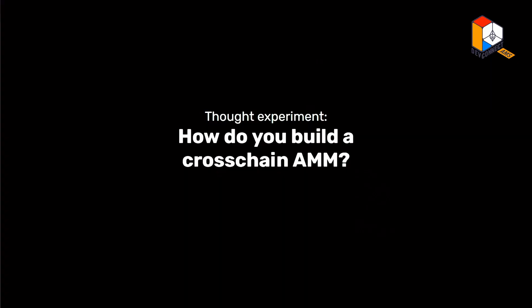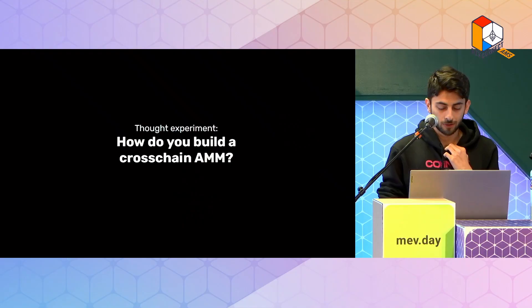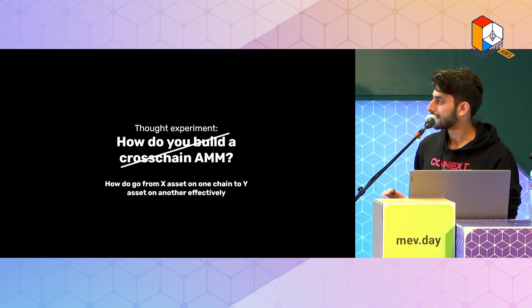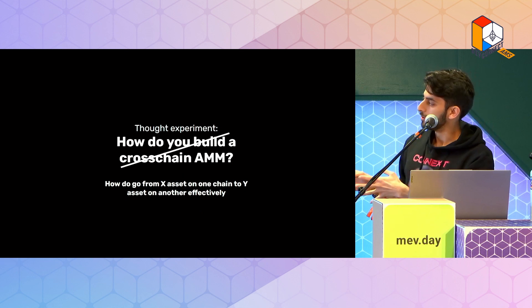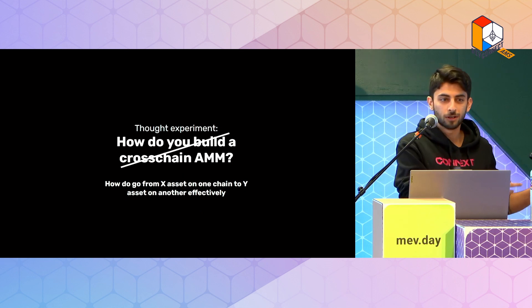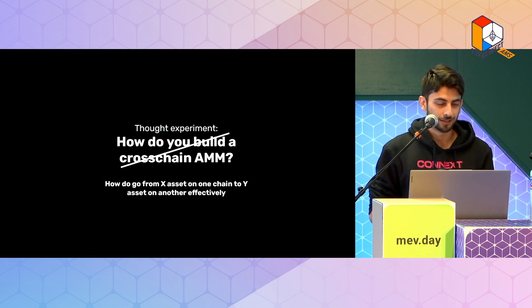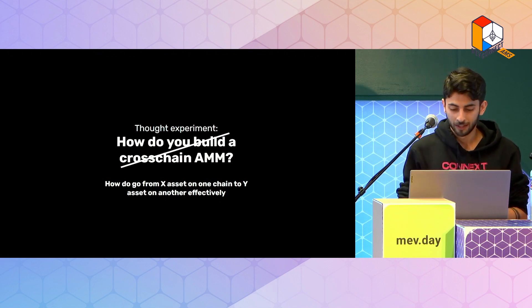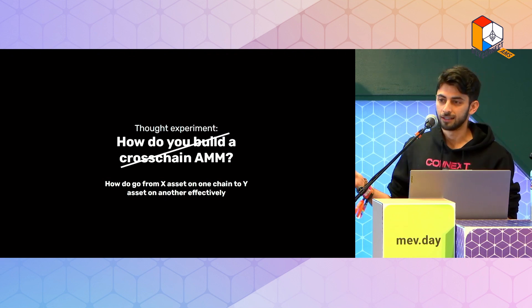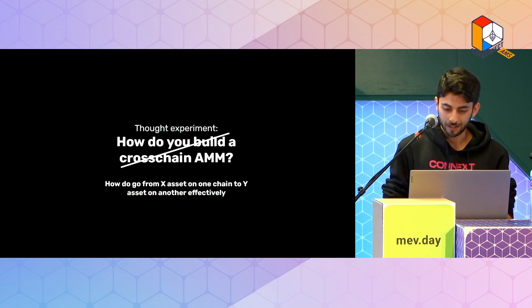First question: how do you build a cross-chain AMM or cross-chain DEX? The notion of a cross-chain DEX means different things to different people because there are several different ways to build this. So I'm going to reframe the question as: how do you go from X asset on one chain to Y asset on another chain? It's a much easier problem to think about, and ideally without ridiculous changes in pricing.